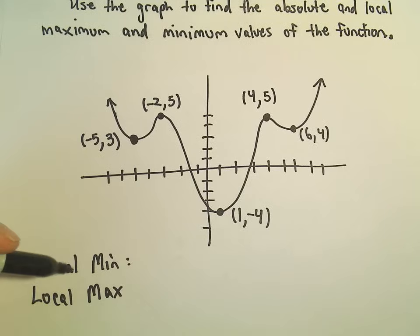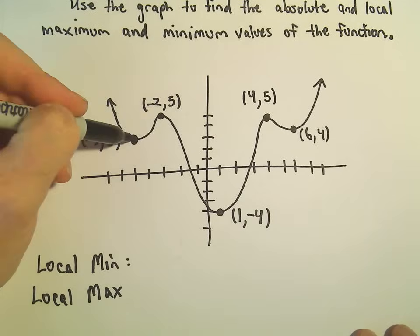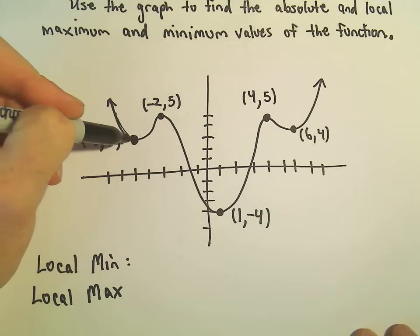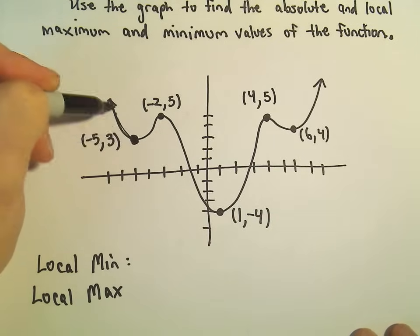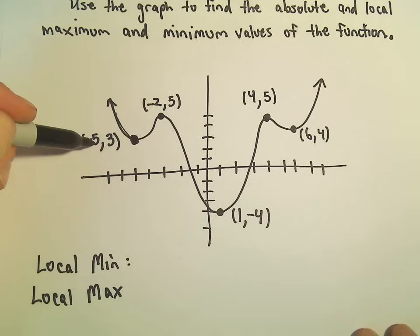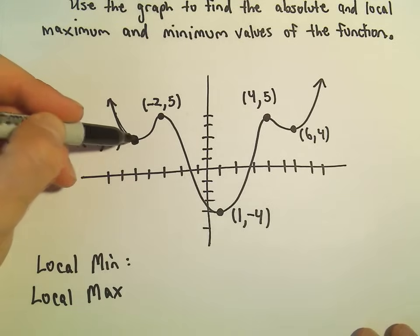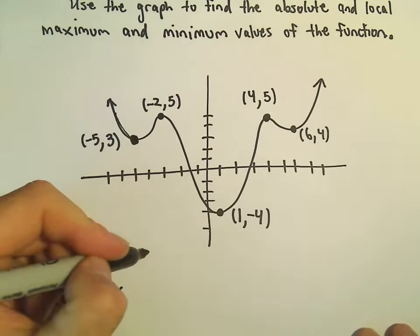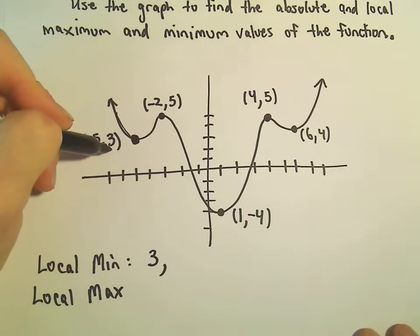If we're looking for local minimums, I'm kind of looking at the valley of my mountain range, just where it bottoms out. So at this point negative 5 comma 3, we would say we have a local minimum. And oftentimes people will just specify the y value, so we could say the y value of 3 corresponds to a local minimum.